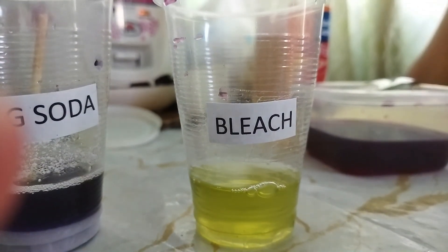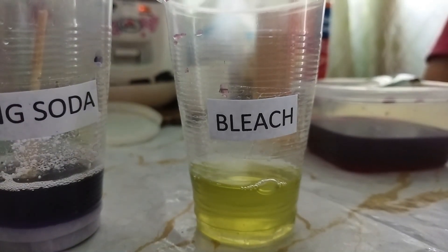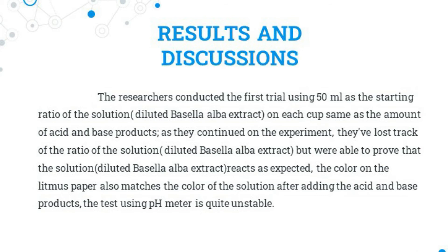After weeks of observation and analysis, a conclusion was finalized to report the results of the experiment. The researchers conducted the first trial using 50 ml as the starting ratio of the solution on each cup, the same as the amount of acid and base products. As they continued the experiment, they lost track of the ratio of the solution but were able to prove that the solution reacts as expected. The color on the litmus paper also matched the color of the solution after adding the acid and base products. The test using a pH meter was quite unstable. Due to that, the researchers conducted another trial using precise ratios of concentrations of alugbati — 1:2 ratio of distilled water, 1:15 ratio, and 1:1 ratio for the added acid and base products. Using the given ratios, the base products showed no reaction while the acid products showed a minimal reaction.